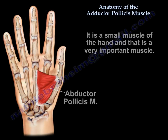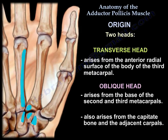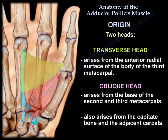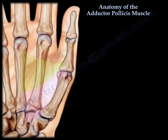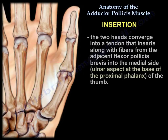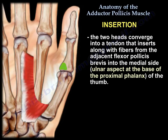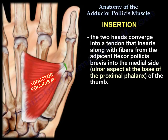Origin: it has two heads. A transverse head which arises from the anterior radial surface of the body of the third metacarpal bone, and an oblique head which arises from the base of the second and third metacarpals, also from the capitate and the adjacent carpals.